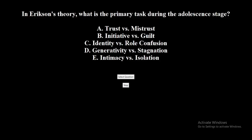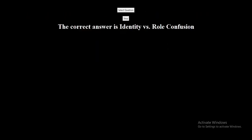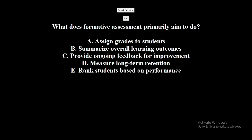In Erikson's theory, what is the primary task during the adolescence stage? A) Trust versus mistrust, B) Initiative versus guilt, C) Identity versus role confusion, D) Generativity versus stagnation, E) Intimacy versus isolation. The correct answer is identity versus role confusion.